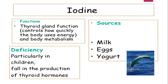Iodine is also an important mineral. Deficiency of iodine causes a condition called goiter, also related to the thyroid. The thyroid gland functions to help the body use energy and regulate body metabolism. Deficiency in children leads to reduced production of thyroid hormones. Sources include milk, eggs, and yogurt. The symptom of iodine deficiency is enlargement of the thyroid gland on the front and side of the neck.